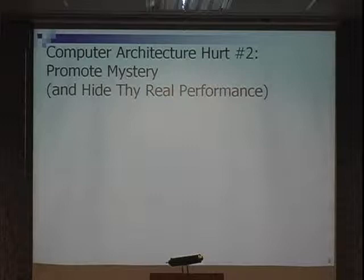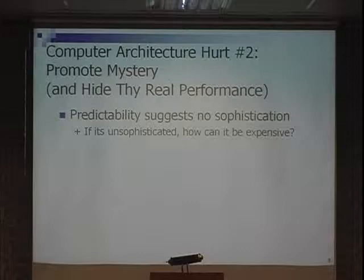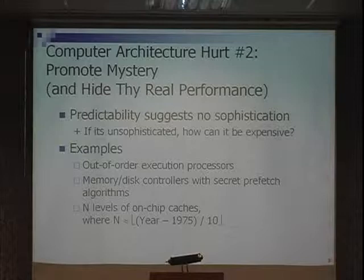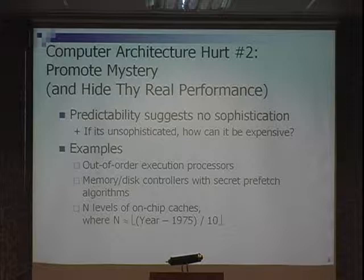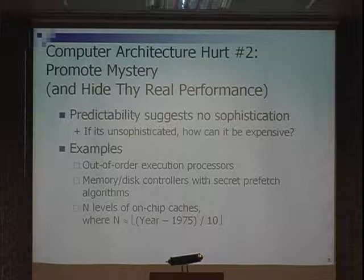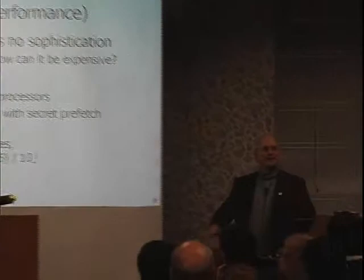Second bad thing: promote mystery, hide thy real performance. If it's predictable, how sophisticated can it be? And if it's unsophisticated, how can it be expensive? Examples: out-of-order execution processors — who knows how long code takes? Nobody. The inventors don't know how long things take on an out-of-order processor. There are memory controllers with secret prefetch algorithms they won't tell you. And every decade we get another level of cache. I remember when microprocessors had no caches, then separate instruction/data caches, then second level — kind of understood that. Third level cache? I don't understand that one. There's a second level cache and a third level cache made from the same material. What the hell's going on there?